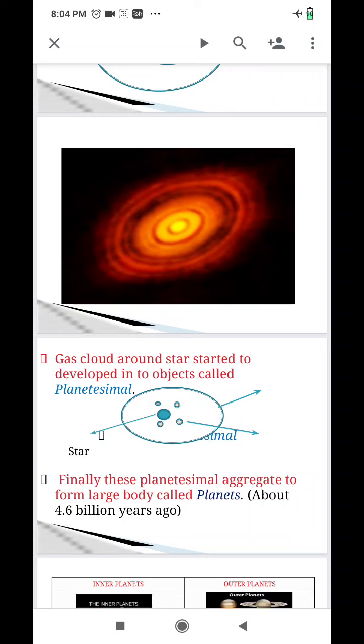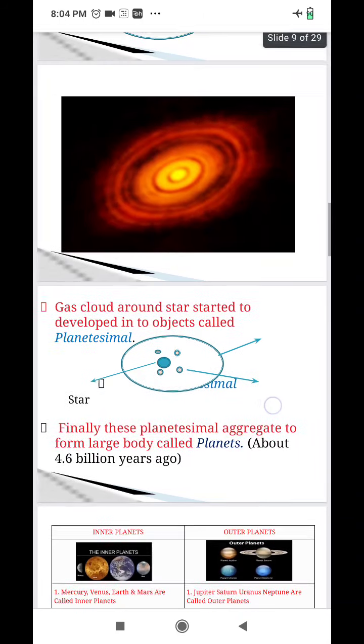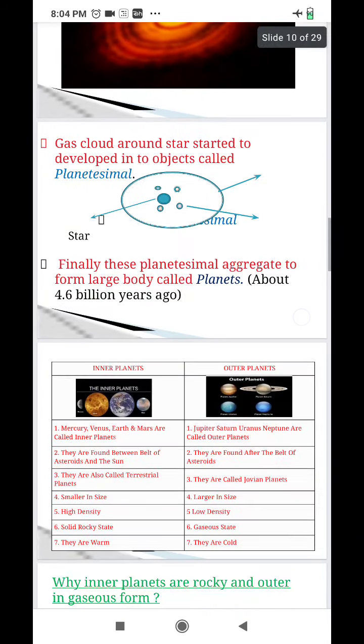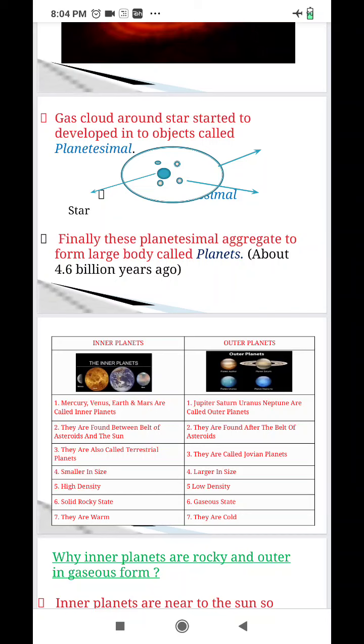As we know that earlier up to 2003, Pluto was considered as a planet but it is not a planet anymore. So now we have only 8 planets. In those 8 planets, there are 4 inner planets and 4 outer planets. There are inner planets, we can see they are Mercury, Venus, Earth and Mars.